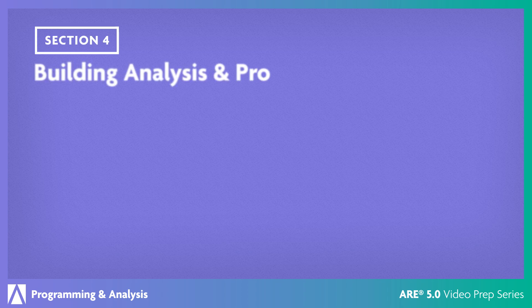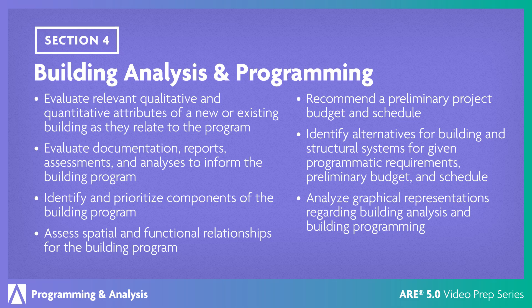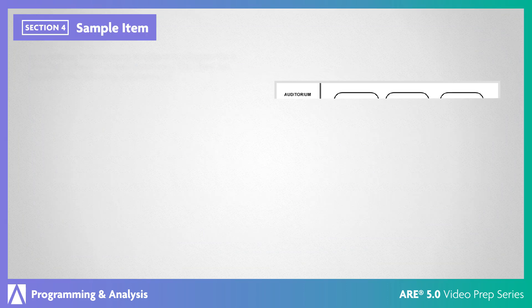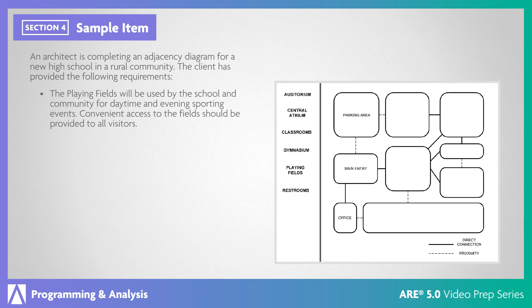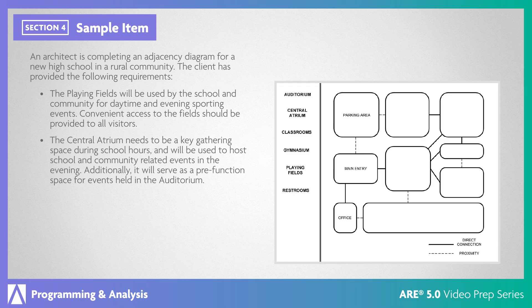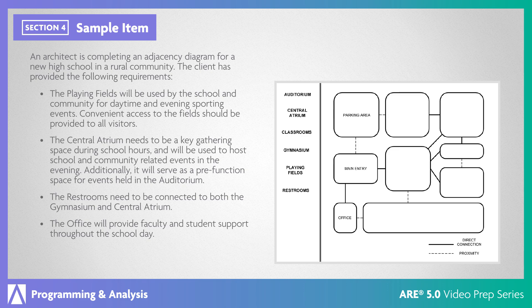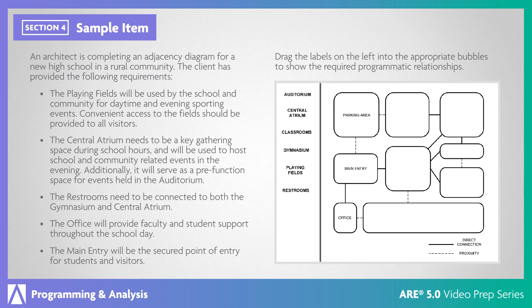In the Building Analysis and Programming section, you'll analyze new or existing buildings relative to the program requirements, cost, and schedule. This is the largest section in the Programming and Analysis division. An architect is completing an adjacency diagram for a new high school in a rural community. The client has provided the following requirements: the playing fields will be used by the school and community for daytime and evening sporting events, and convenient access to the field should be provided to all visitors. The central atrium needs to be a key gathering space during school hours and will host school and community-related events in the evening, and will serve as a pre-function space for events held in the auditorium. The restrooms need to be connected to both the gymnasium and central atrium, and the office will provide faculty and student support throughout the school day. The main entry will be the secured point of entry for students and visitors. Drag the labels on the left into the appropriate bubbles to show the required programmatic relationships.